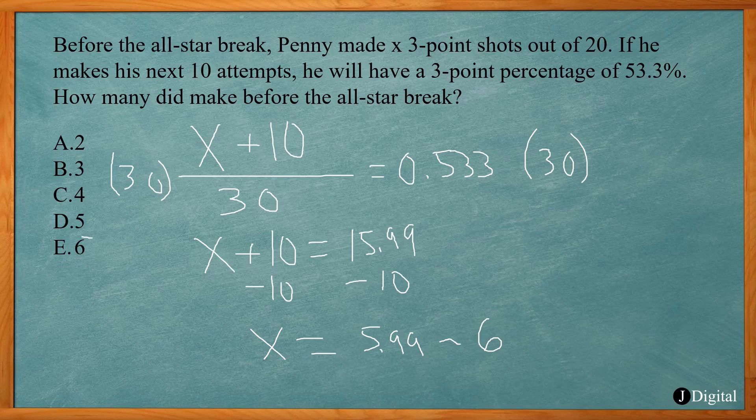So the answer is choice E. Our unknown was how many he actually made before the all-star break, using variable X. He made an additional 10 attempts after that — he made all 10 — so his percentage would be 53.3%. We set up that equation and solved for X.